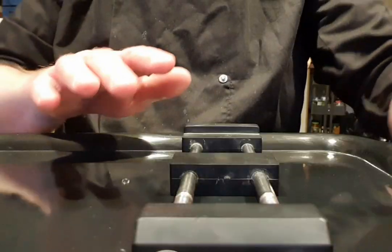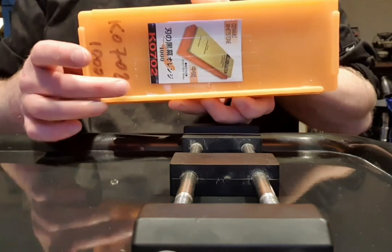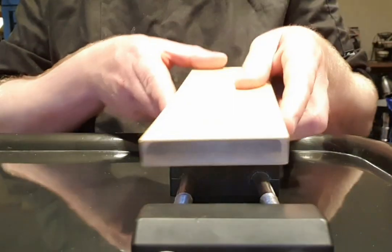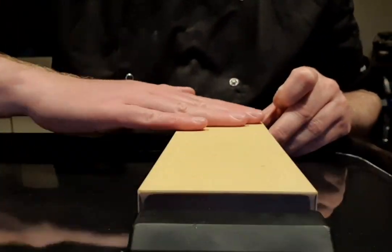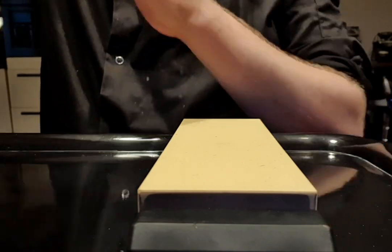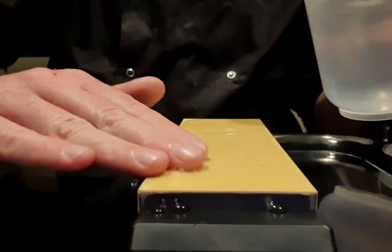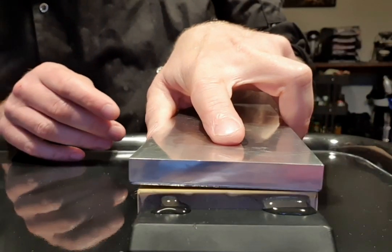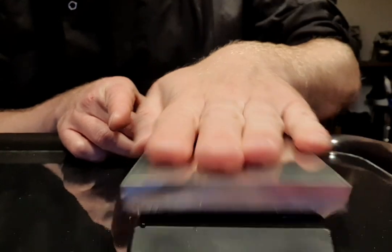What we're gonna try today is to use the Shapton 1k and redo a sort of Kamisori bevel. We'll use a ratio of one to two. Kamisori could be seven to one or seven to two, but because this one has been honed badly for Kamisori, we need to go halfway.